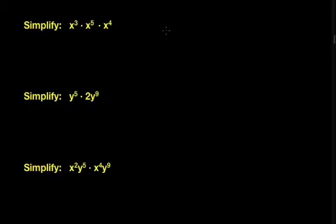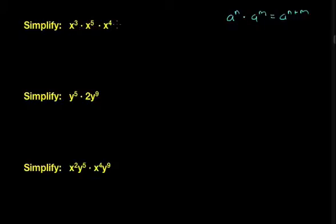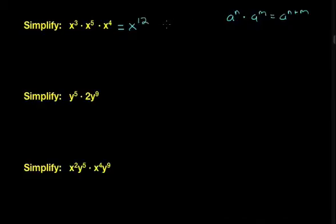Let's go through some examples. First, let's remind ourselves of the rule: a to the n times a to the m equals a to the n plus m — that's our product of powers property. In this first problem we've got x cubed times x to the 5th times x to the 4th. When you have like bases, all you have to do is add the exponents. x multiplied by itself 3 times, times 5 times, times 4 times, for a total of x multiplied by itself 12 times. So the answer is x to the 12th.